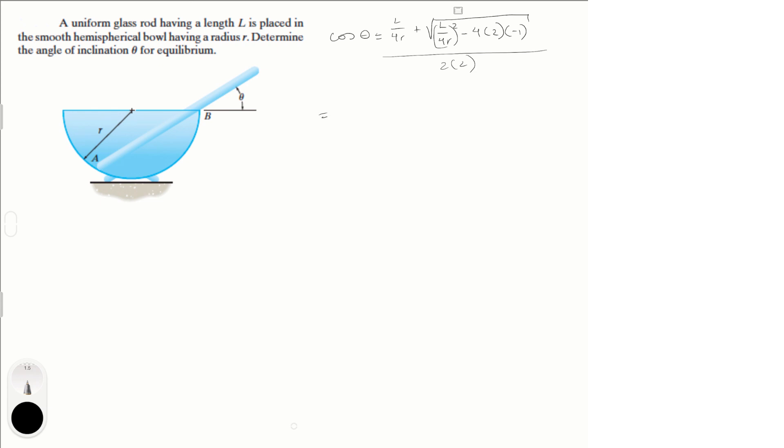Now it's all about simplifying. L over 4R plus L square over 16R square plus 8 all over 4.